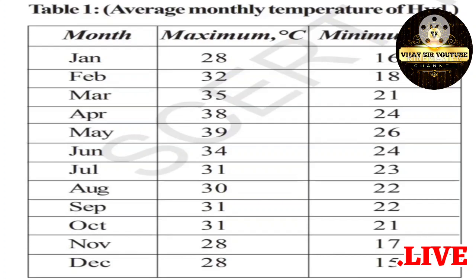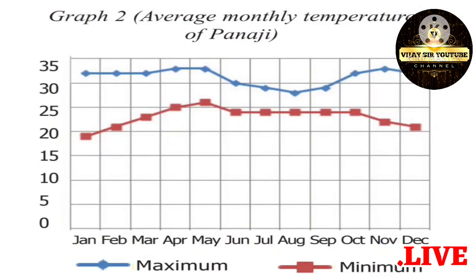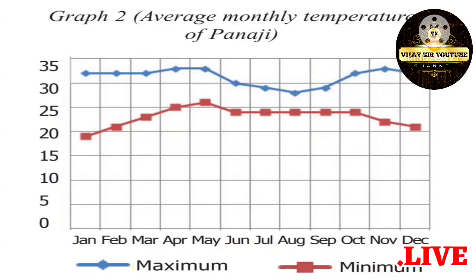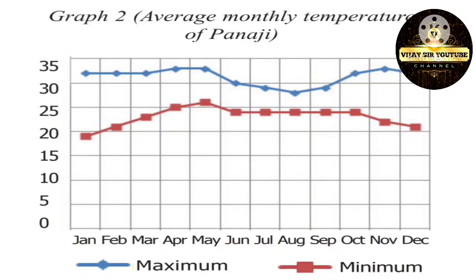The average of maximum and minimum monthly temperatures are plotted on graph 2. You can observe the Panaji average monthly temperatures — the graph is drawn based on the tabular temperature data. Maximum and minimum temperatures are almost constantly maintained throughout the year, from January to December, with no much difference. Panaji maintains almost constant temperatures.